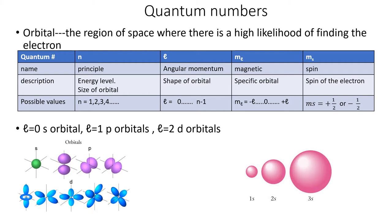If you haven't read those textbook sections on quantum numbers, stop the video and read them. Quantum numbers are things you need to see a couple of times. Hopefully this video will help clarify things that didn't quite make sense when you first read through. The first definition we need is what we mean by an orbital — a region of space where there's a high likelihood of finding the electron, a probability density. You have a very good chance of finding the electron there most of the time, though it's not guaranteed.